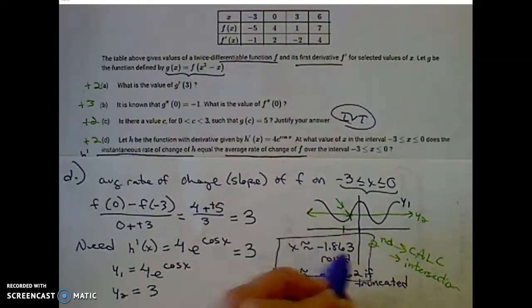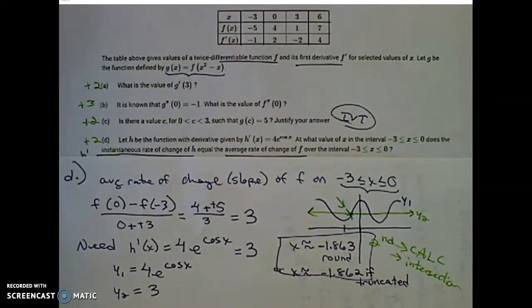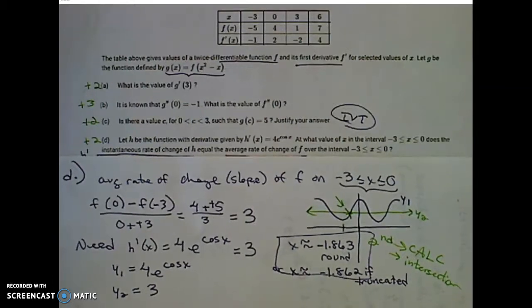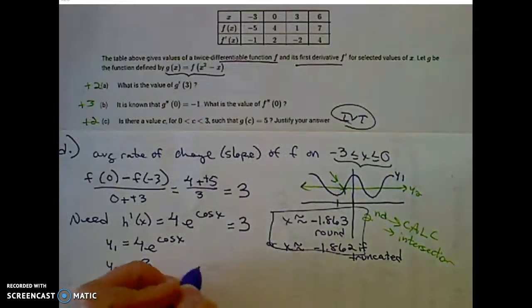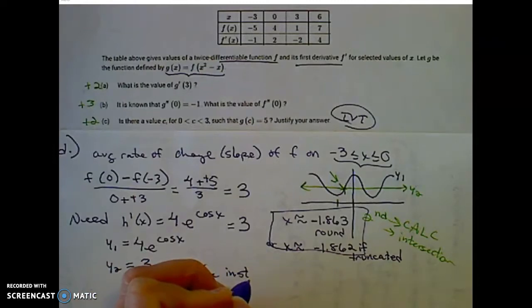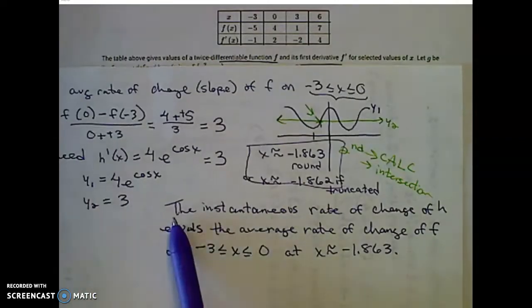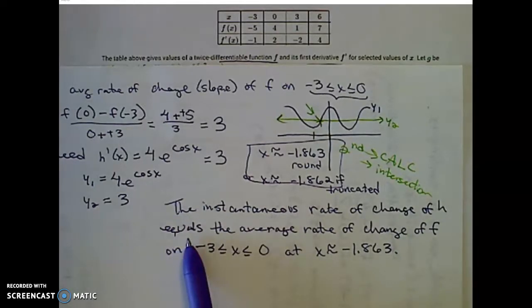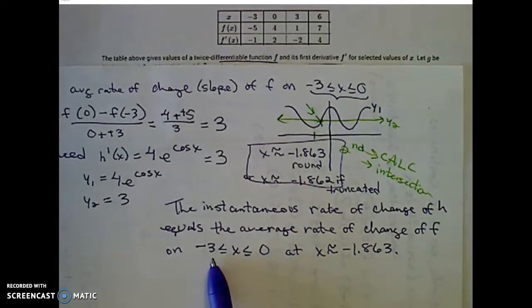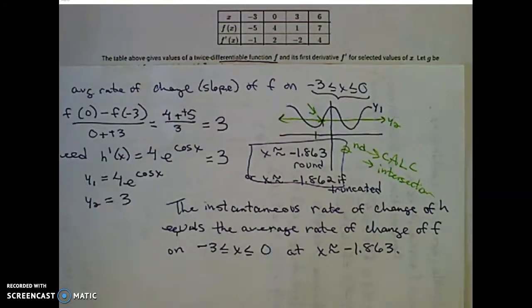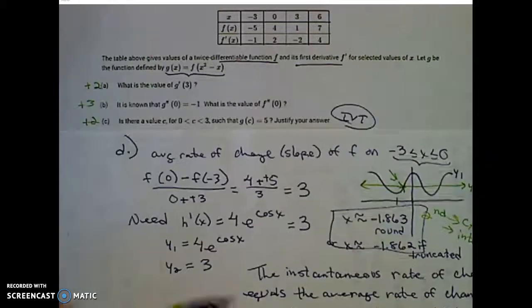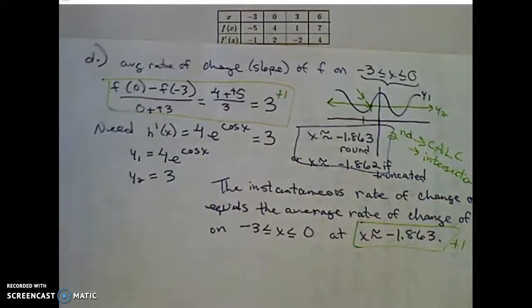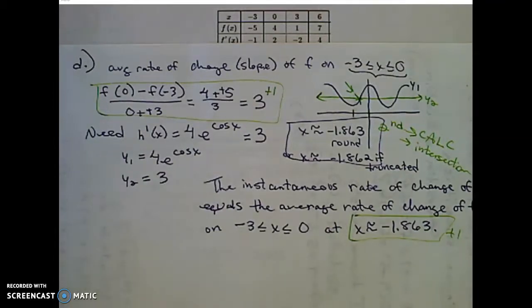Either one of these is accepted — you can round to the nearest thousandth or truncate after the third decimal place. To state this clearly: the instantaneous rate of change of h equals the average rate of change of f on the interval from negative 3 to 0 at x is approximately negative 1.863. We got points for finding the average rate of change and then a point for the solution. Thanks for tuning in and checking what you missed. Have a great day.